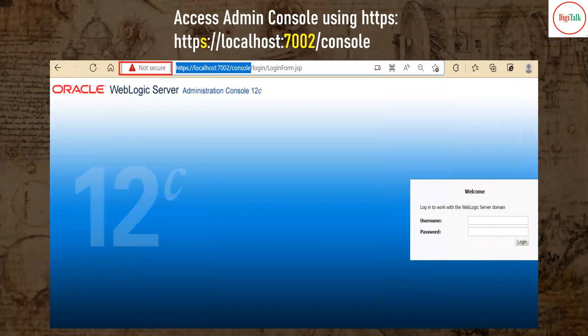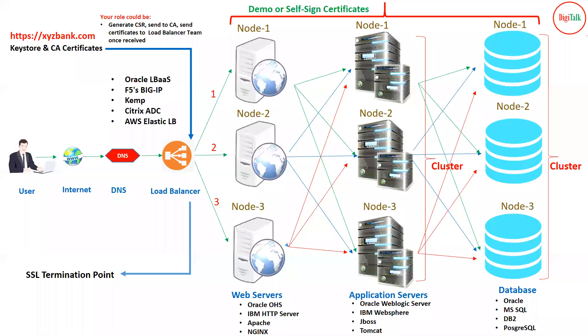The WebLogic admin console is now accessible via HTTPS on port 7002. Because a self-signed certificate is being used, the browser shows a security warning. Self-signed certificates are not recommended for production because end users will see a warning that the website is not secure. This is why almost all production applications are configured with third-party CA SSL certificates.